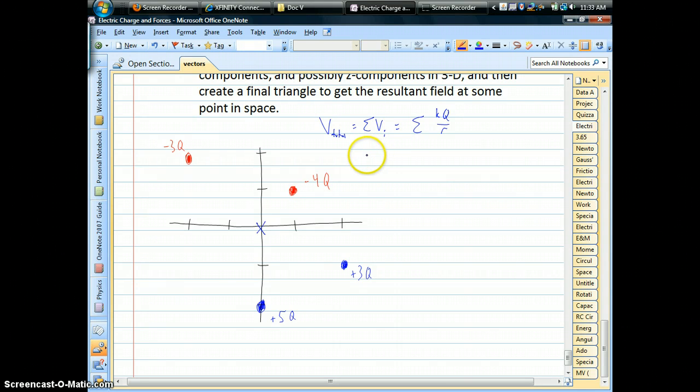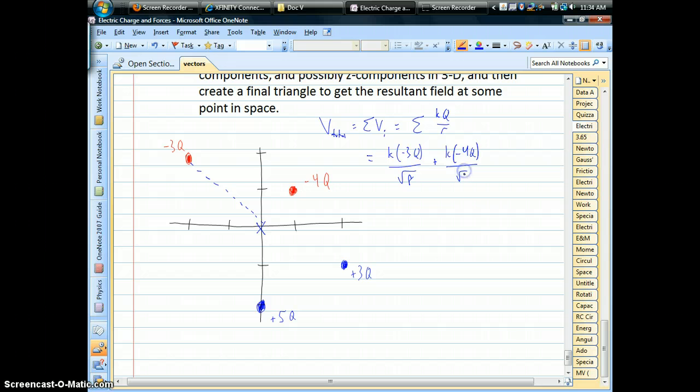So if we just go ahead and do this, we see that for that negative 3q up on the top left, we're going to have our electric constant times negative 3q, and that distance from the charge down to the origin, if we use Pythagorean's theorem, it's 2 and 2, so that's going to be over root 8. And then we have to add to that, we have another negative charge, so we're going to have our constant times negative 4q, and that's all going to be over root 2, that distance to the origin.